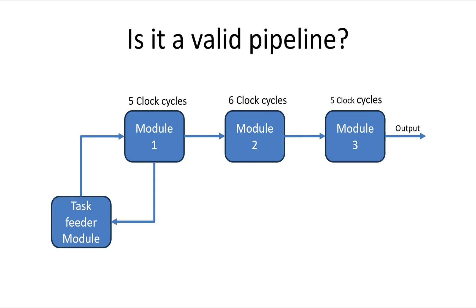Friends, let me reveal the actual solution which is the most valid one. Here we know that module 1 will take a fixed 5 clock cycles only, module 2 will take 6 clock cycles only, and module 3 will take 5 clock cycles only to complete the task.